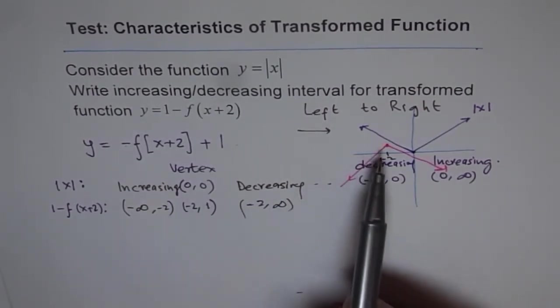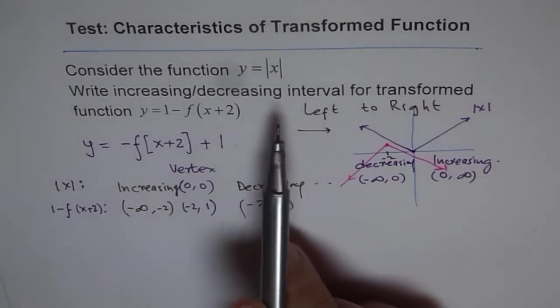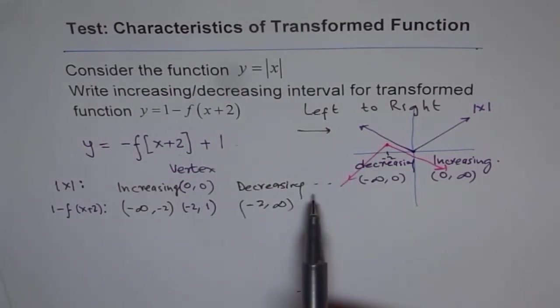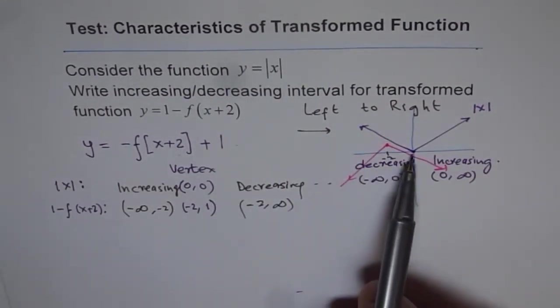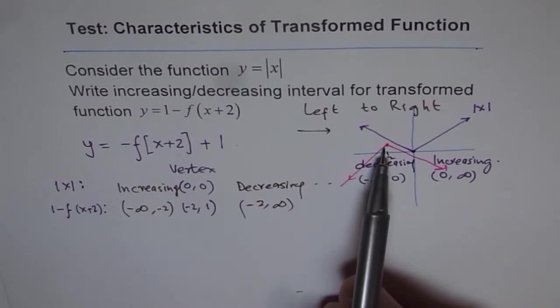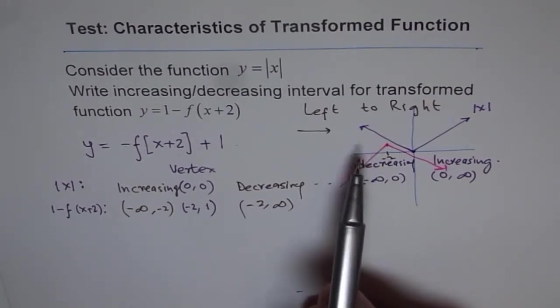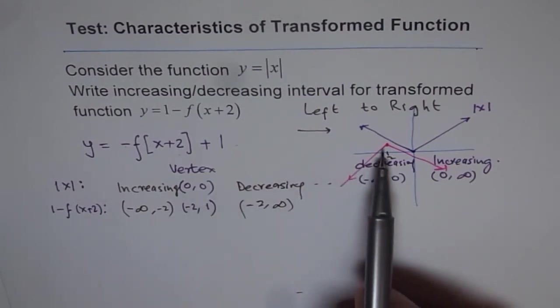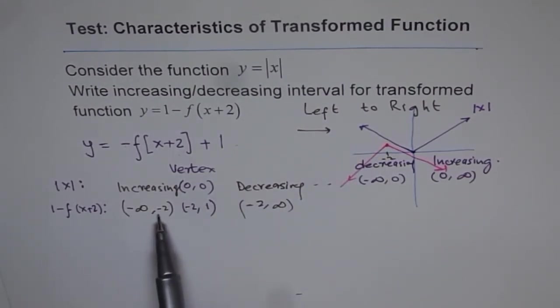So that is why the interval which was originally decreasing becomes increasing. And second, the shift in vertex changes the x value. So instead of from minus infinity to 0, now we have an increasing interval from minus infinity to minus 2 and decreasing thereafter. Do you see that?